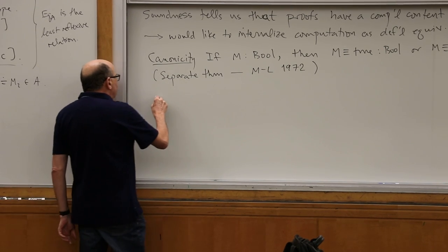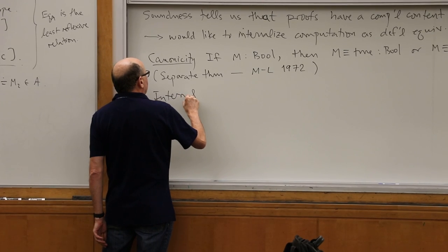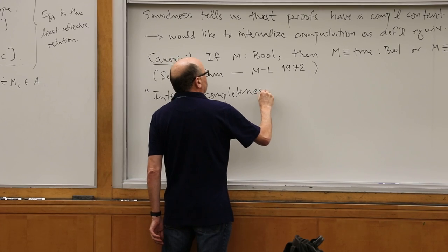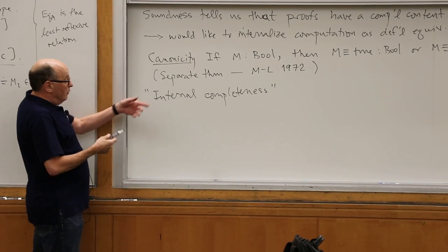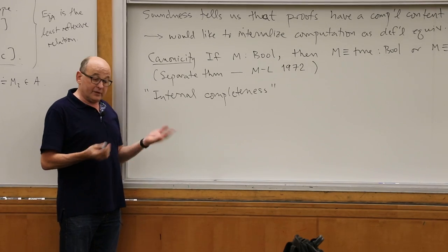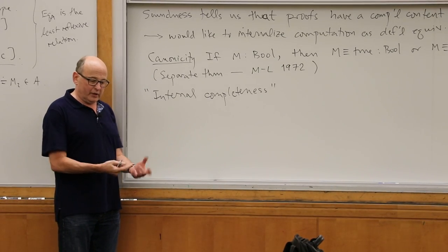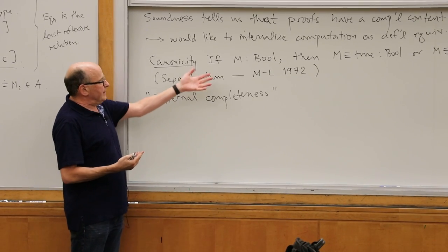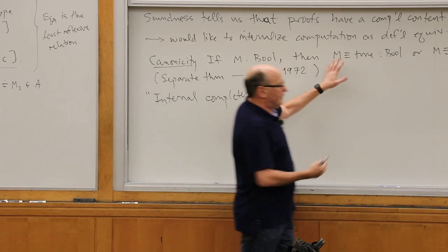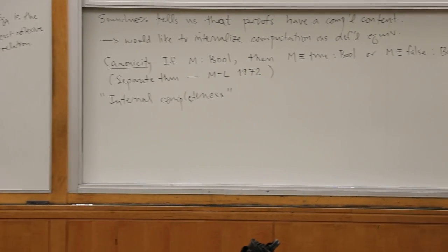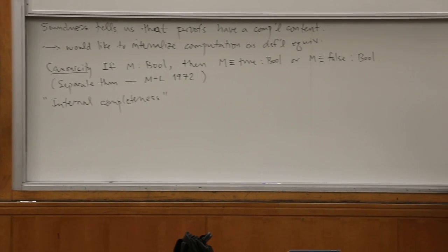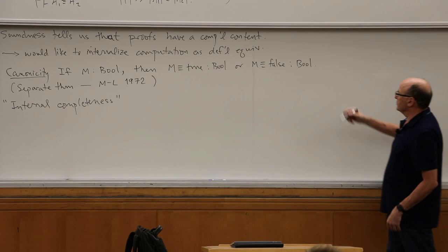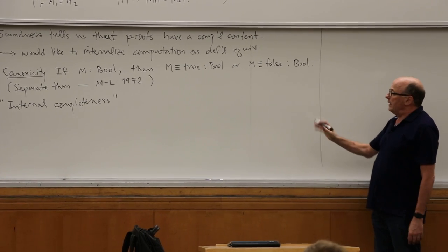I would call it a kind of completeness property. If you feel that the purpose of the formalism is as your implementation — this is what you're working with, and you need access to the truth — then you might like it to be internally complete: if you have a closed Boolean, you should be able to calculate what it is, whether it's true or false. And believe it or not, it can turn out that this is not the case.